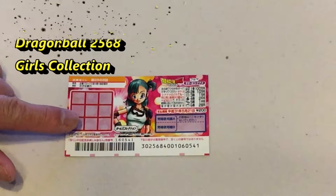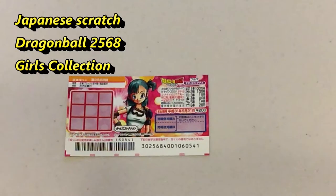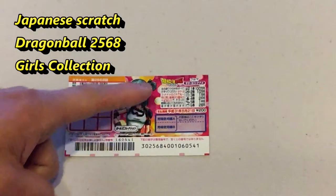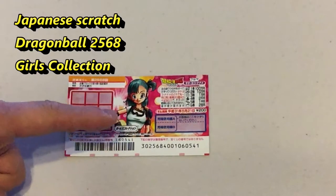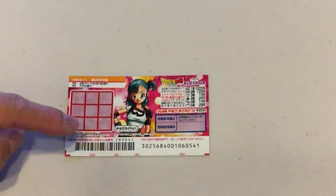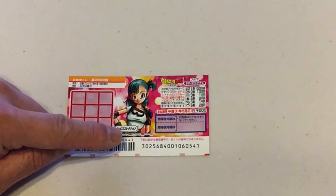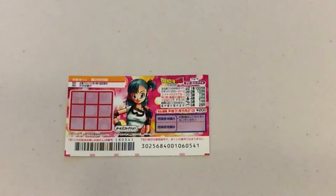This cute anime character, it is called Dragon Ball again, and it is for drawing two, five, six, eight. And over here in katakana English it says Garu's Collection, which means Girls Collection. Don't ask me why.